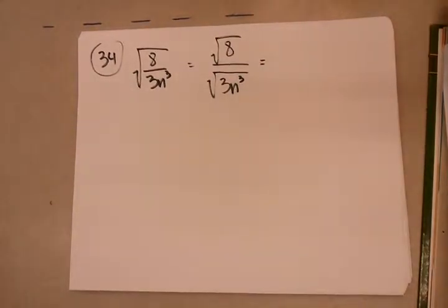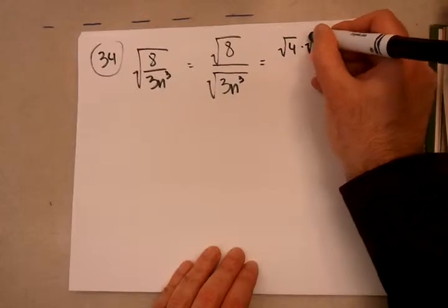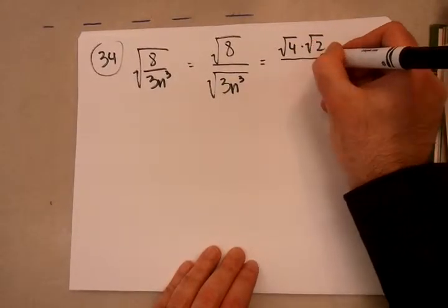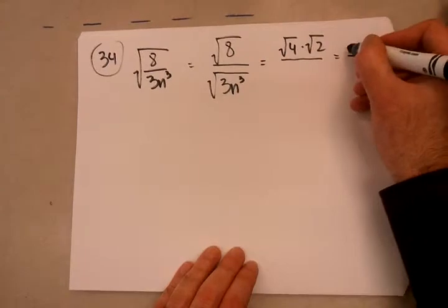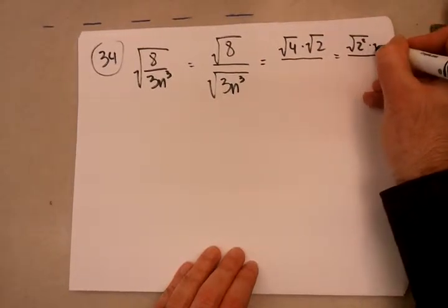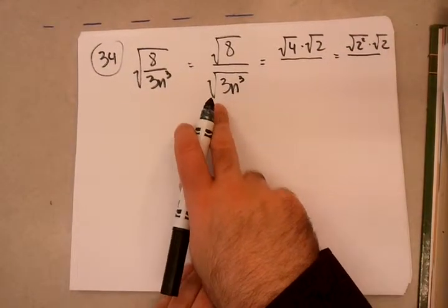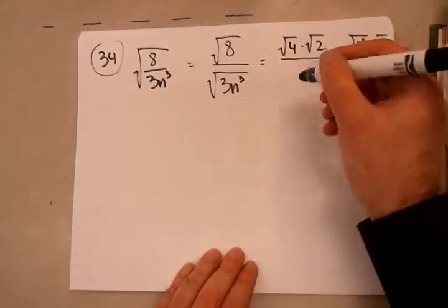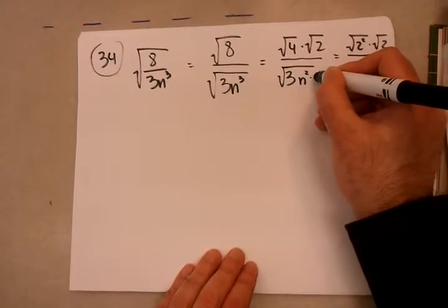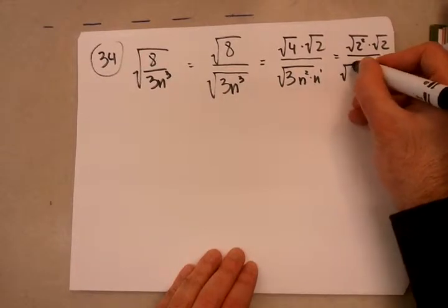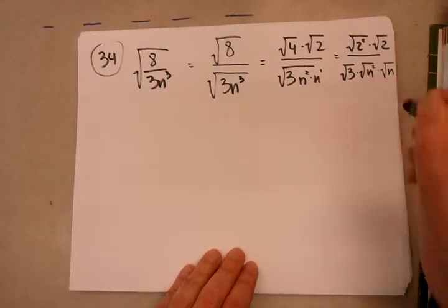So, taking a look at the numerator, we have an 8, which is not a perfect square, but it's made of 4 and 2, which then, of course, break down into, that's 2 squared. In the denominator, we have 3 n to the third power. 3 I really can't do anything with, but I can work with the n to the third power. I can break it down into an n squared times an n to the first. So, that's going to be root 3 times root n squared times just an n.